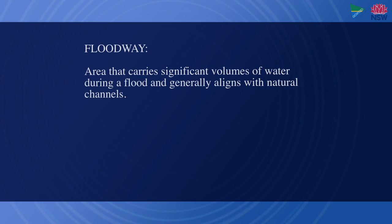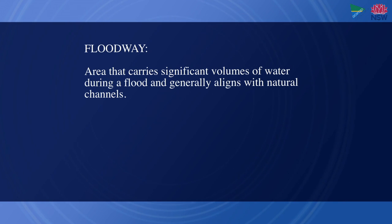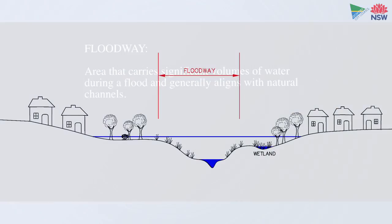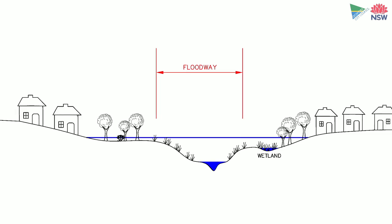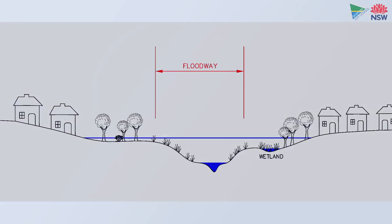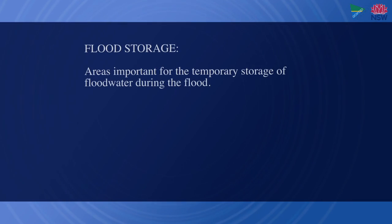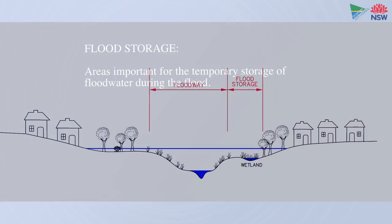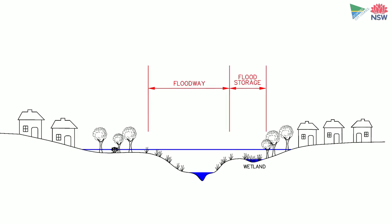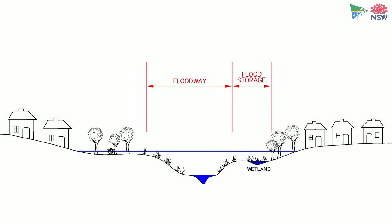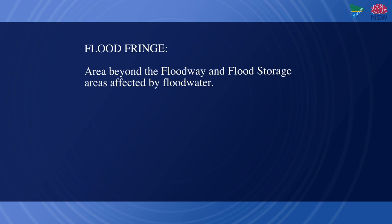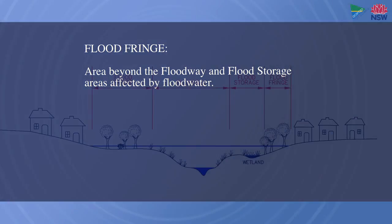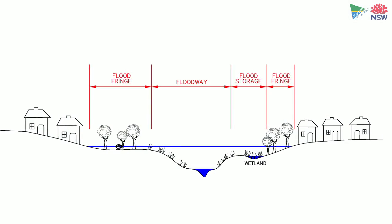Floodway refers to an area that carries significant volumes of water during a flood and generally aligns with natural channels. Any blockage in these areas will result in a rise in flood levels. Flood storage is an area important for the temporary storage of floodwater during the flood, and the cumulative impact of any fill in these areas needs to be studied and determined. Flood fringe is any area beyond the floodway and flood storage areas affected by floodwater.